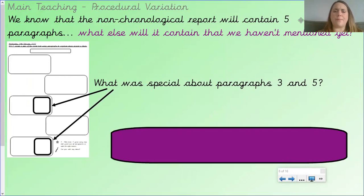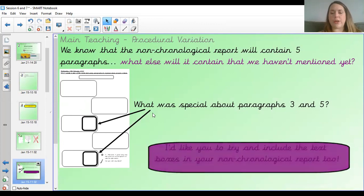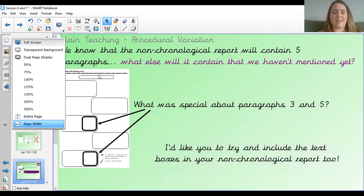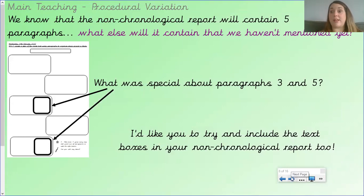So we know that the non-chronological report will contain five paragraphs. What else will it contain that we haven't mentioned yet? Can you remember some of the features? Well, it will have a title, won't it? And it will have subtitles. It will be in paragraphs. It will include facts, technical language. It will be in the third person. Is there anything I've missed out? I think I've covered it at all. And what's special about paragraph three and five? There's a bit of a clue here. They have text boxes in, don't they? So it would be really nice if you could include some text boxes in your non-chronological report today, please. Today and tomorrow. This lesson is actually going to take two lessons. So you'll be writing this today, and you'll also get tomorrow's lesson to write it.